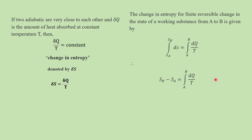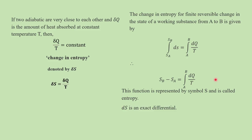The expression — the integral from A to B of dQ by T, which equals the integral from SA to SB of dS — is a function of the thermodynamic coordinates of the system. This function is represented by the symbol S, which is called entropy. dS is an exact differential, and entropy is an extensive property because it depends on the mass of the working substance.